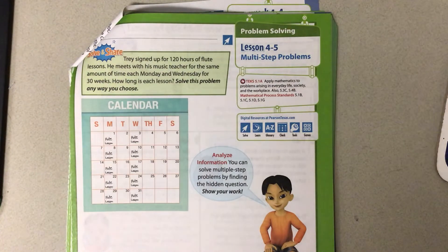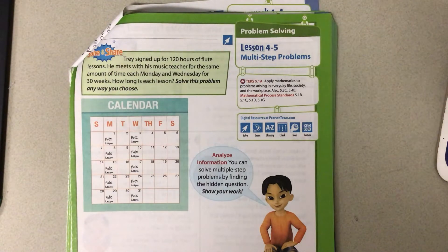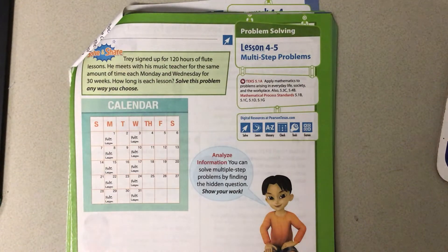So Trey signed up for 120 hours of flute lessons. He meets with his music teacher for the same amount of time each Monday and Wednesday for 30 weeks. How long is he in each session?